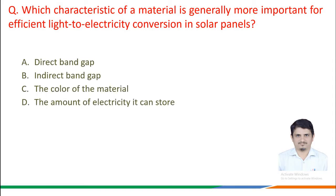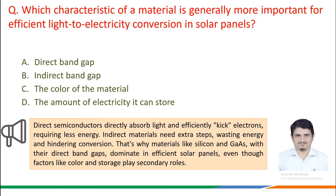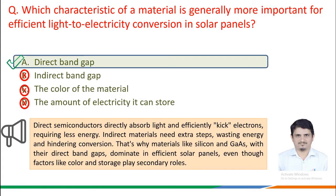Which characteristic of a material is generally more important for efficient light-to-electricity conversion in solar panels? Direct semiconductors directly absorb light and efficiently excite electrons, requiring less energy. Indirect materials need extra steps, wasting energy and hindering conversion. That is why materials like silicon and gallium arsenide with their direct band gaps dominate in efficient solar panels. The correct answer is Option A: direct band gap.